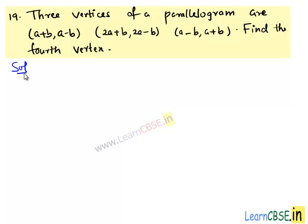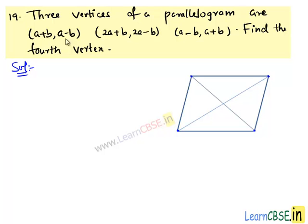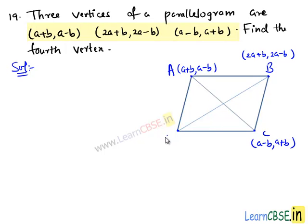Moving on to the solution. Here, in this problem, we are given three vertices of the parallelogram: say A is (a+b, a-b), B is (2a+b, 2a-b), C is (a-b, a+b), and let D(x, y) be the fourth vertex.